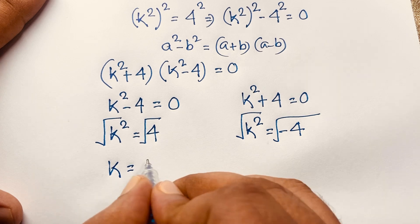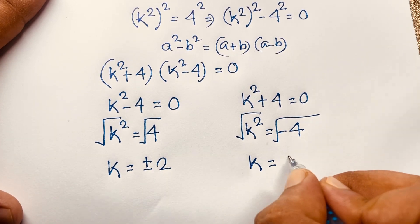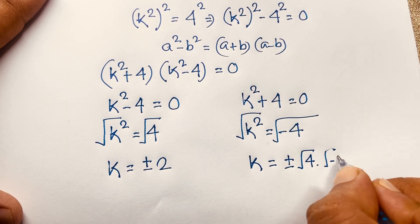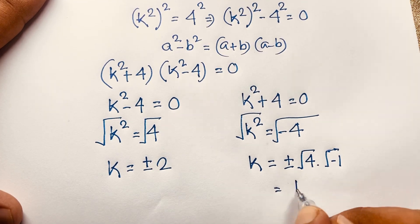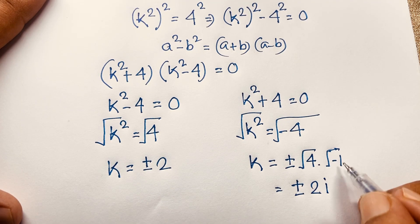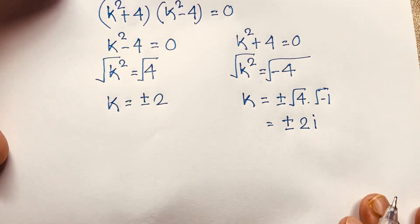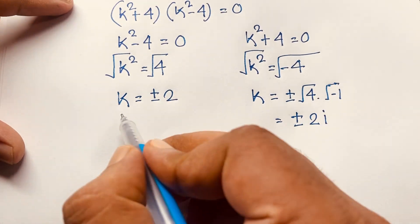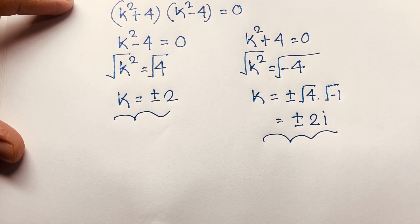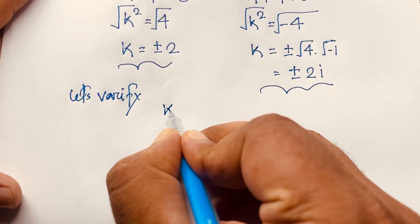Taking the square root of both sides gives k equals plus or minus 2. For the second case, k squared equals negative 4, so k equals plus or minus the square root of negative 4, which is plus or minus 2i, since the square root of negative 1 is i — a complex number. So we have four solutions: k equals plus or minus 2 and k equals plus or minus 2i.